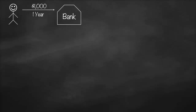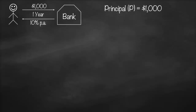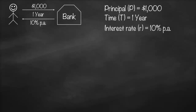Let's assume that Mark is going to deposit a thousand dollars in a bank for one year and in return he will receive 10 percent per annum. The thousand dollar deposit is called the principle, which we give the symbol P equal to one thousand dollars. The one year refers to our time, given the symbol t equal to one year. The 10 percent per annum is our interest rate, given the symbol r equal to 10 percent per year. So what will be the total interest amount Mark will receive after one year? This is called our interest amount, given the symbol capital I.